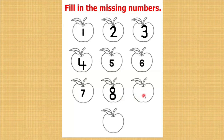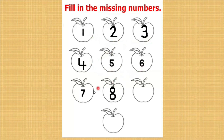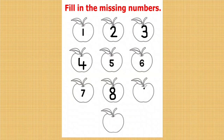After 8, the number is missing. What comes after 8? To fill this number, you have to keep 8 in your mind and do the forward counting from 1. 1, 2, 3, 4, 5, 6, 7, 8, 9. What comes after 8? 9. Let us write. After 8, 9 will come.